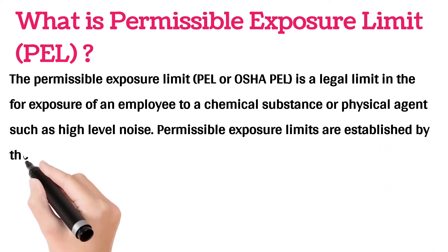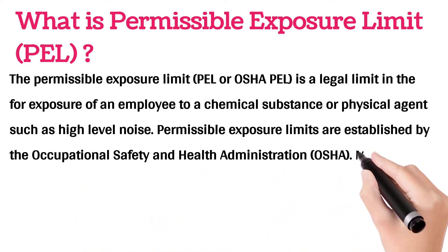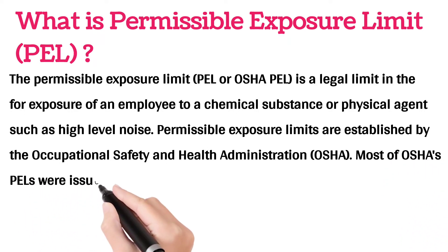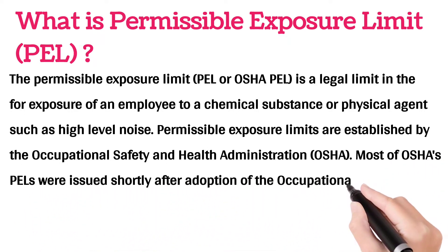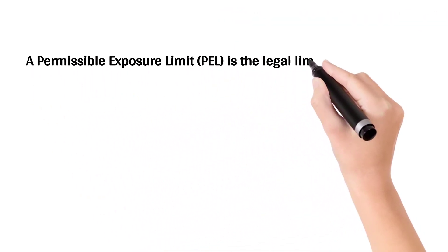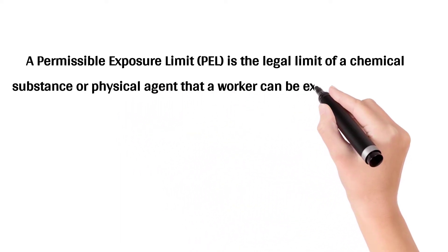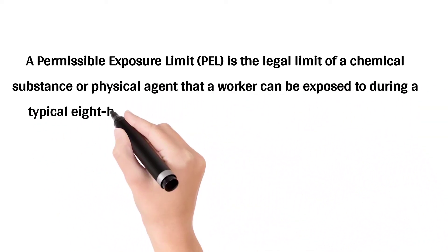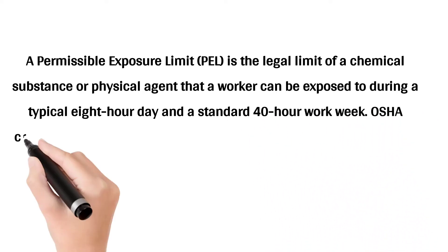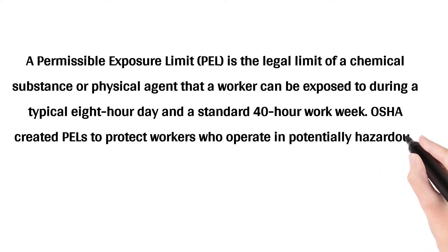Most of OSHA's PELs were issued shortly after the adoption of the Occupational Safety and Health (OSH) Act in 1970. A Permissible Exposure Limit (PEL) is the legal limit of a chemical substance or physical agent that a worker can be exposed to during a typical 8-hour day and a standard 40-hour work week. OSHA created PELs to protect workers who operate in potentially hazardous environments.